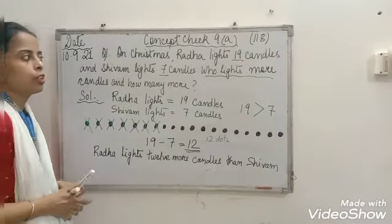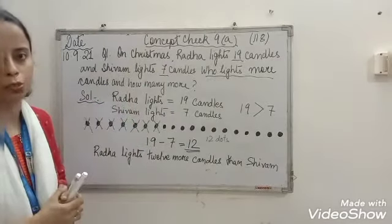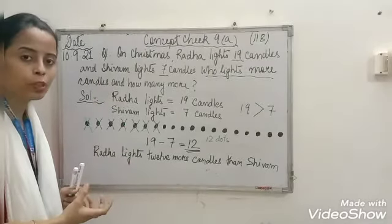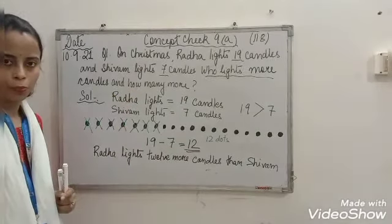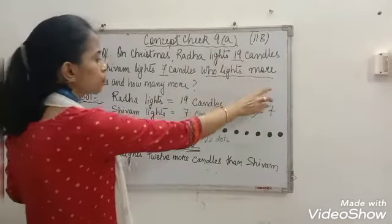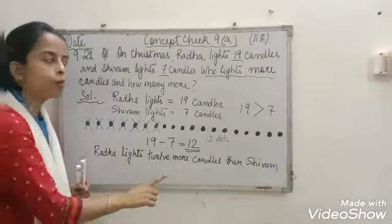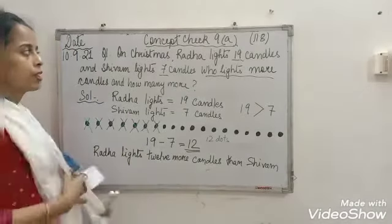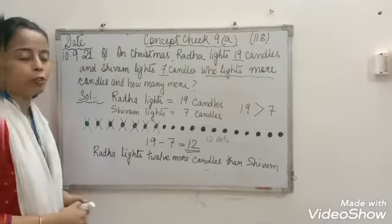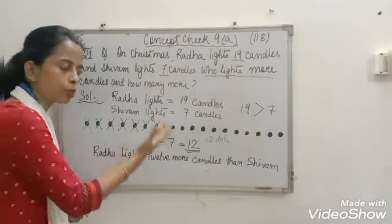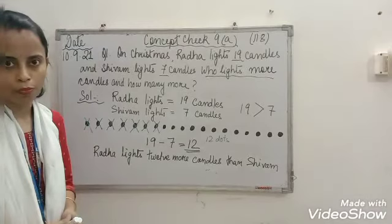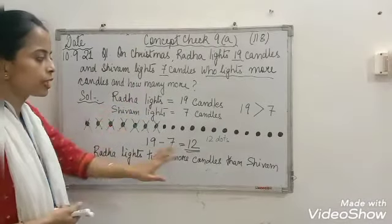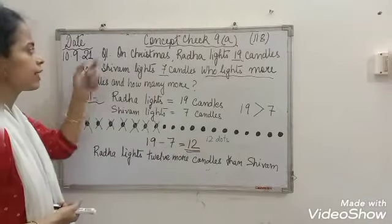Yes children. This question is based on compare reason situation. We have solved it by doing subtraction, and the method we used is drawing dots. So the two answers — who lights more? Radha lights more. How many more? 12 more candles than Sribam. So now let us take question number 2. I will explain question number 2, and then question 3 you do it at home. Question 3 is your homework.